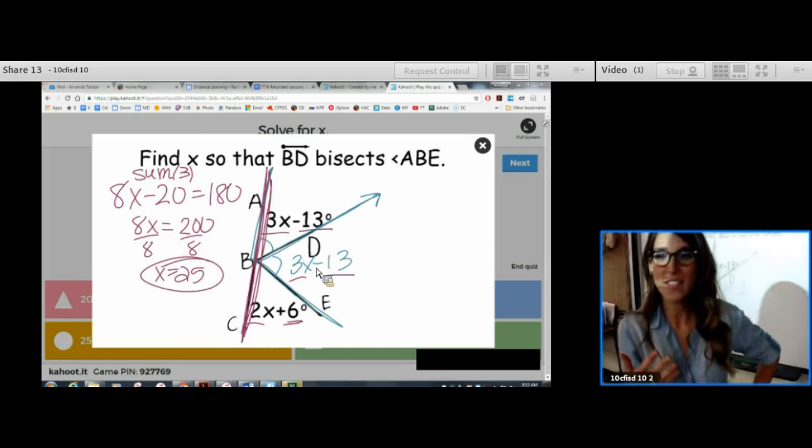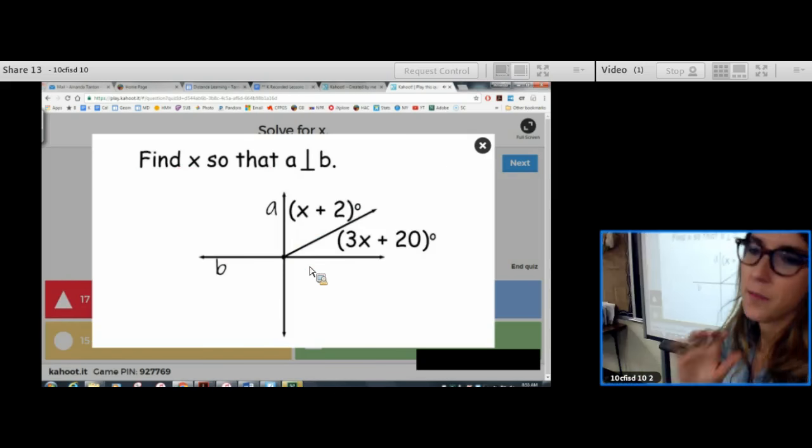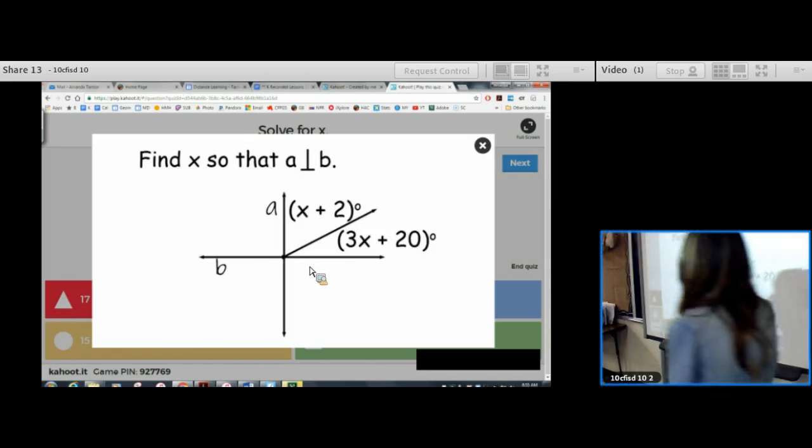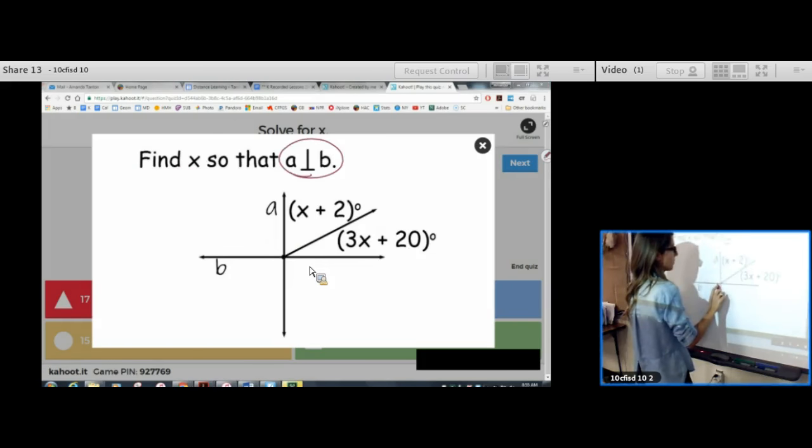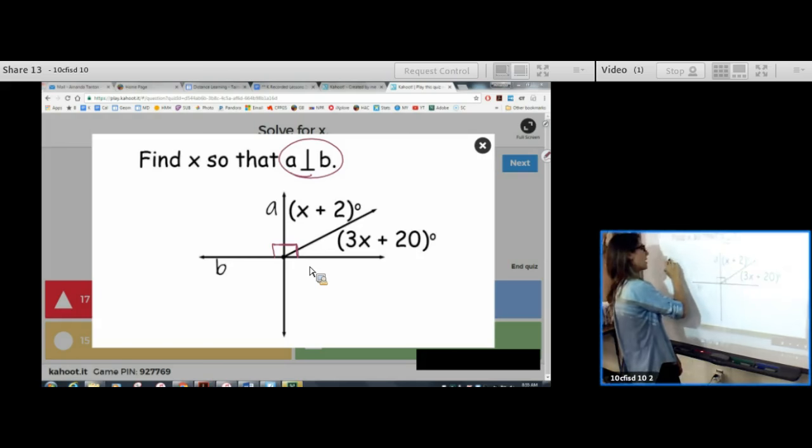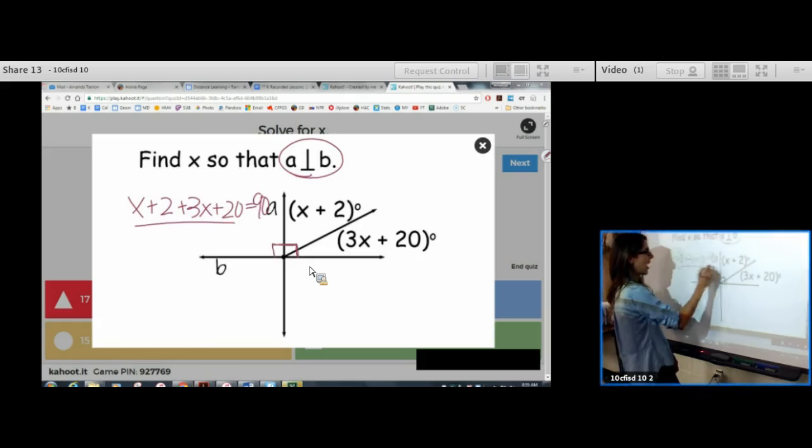So, you had to be kind of creative in that problem. So, that was a good problem. Testing your knowledge on bisectors. In this problem, we're going to find x so that a is perpendicular to b. Perpendicular means they meet at a 90 degree angle. So, we are finding x to force these angles to be complementary. There we go. They should add to equal 90.